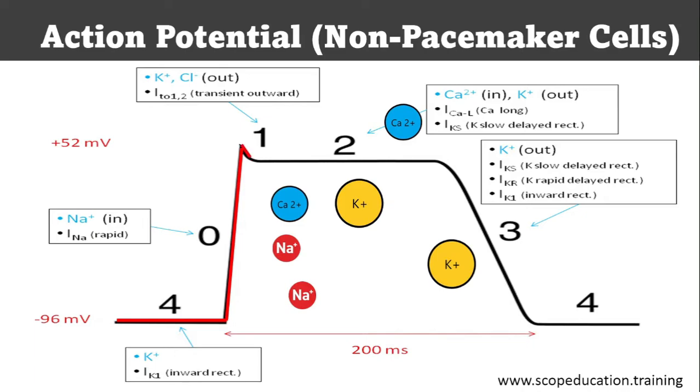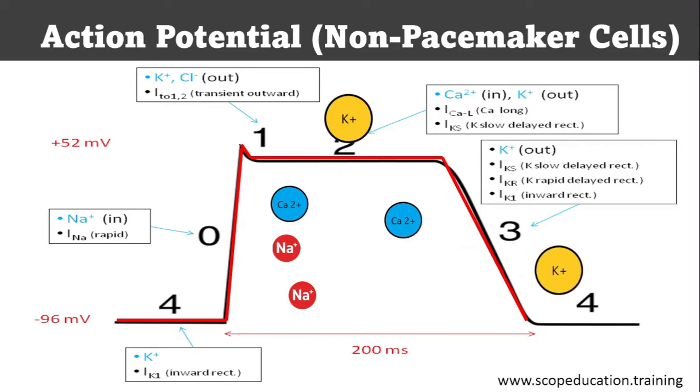At phase one, the sodium channels close, which stops the positive ions from entering. Phase two is the plateau phase and is shown by the horizontal line on the graph. Potassium, which is positively charged, exits the cell and calcium enters at a rate that keeps the charge relatively constant. At phase three, the calcium channels close and potassium dumps out of the cell and sodium slowly enters. This causes a shift to a more negative charge. Phase three shows repolarization of the cell.